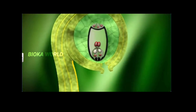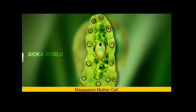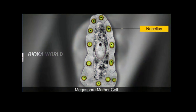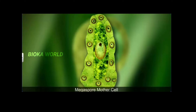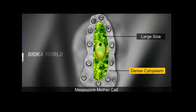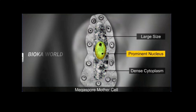In the nucellus of the mature ovule lies the embryo sac, the female gametophyte, which develops from a megaspore. This megaspore is formed from one of the nucellus cells towards its micropylar end, which gets differentiated into the megaspore mother cell. This can be easily distinguished from other cells due to its large size, dense cytoplasm, and prominent nucleus.